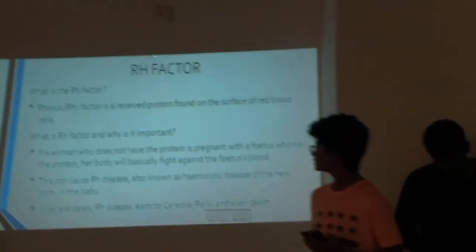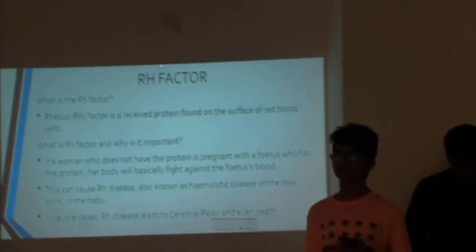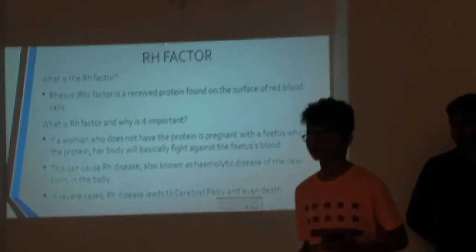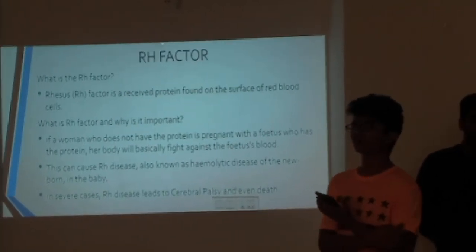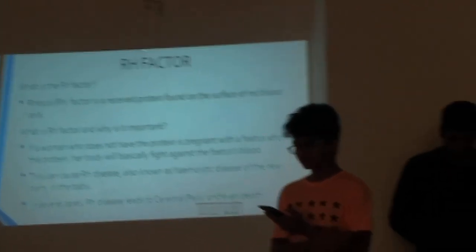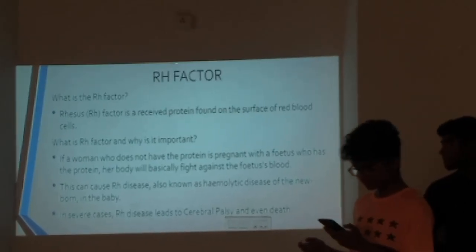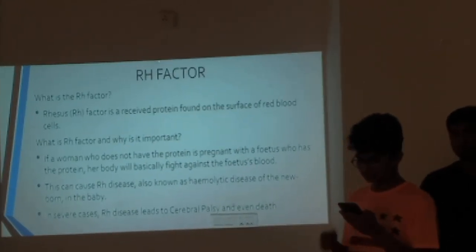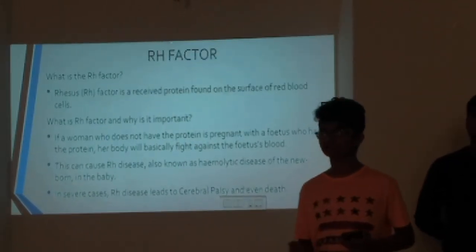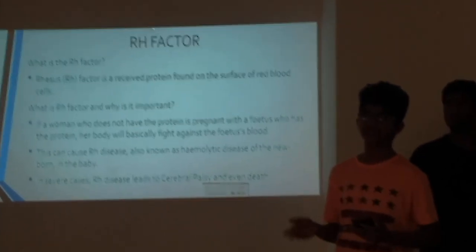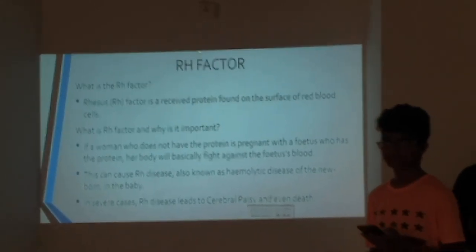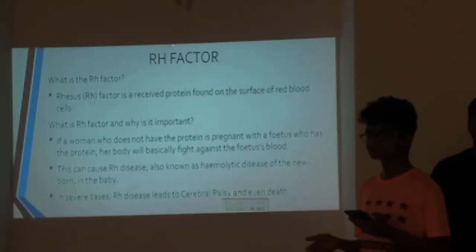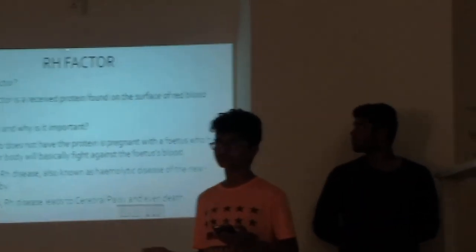The RH factor is a protein found on red blood cells. If a person has this protein, they are RH positive; if not, they are RH negative. The most common blood type is RH positive. In many cases, it plays a critical role in pregnancy. If a woman who is RH negative is pregnant with a fetus that is RH positive, her body will make antibodies against the fetus's blood. This can lead to several problems, and in certain cases, RH disease can lead to serious complications and even death.